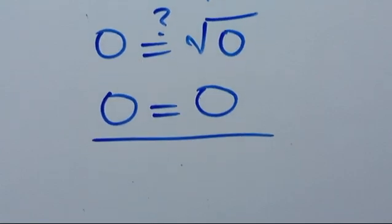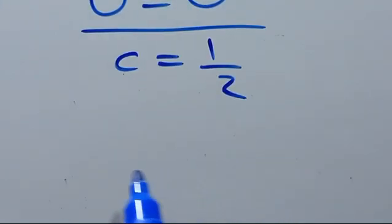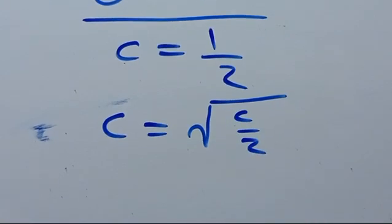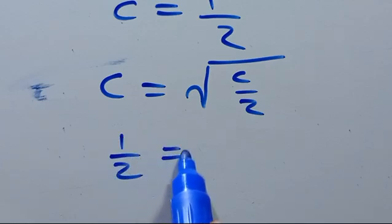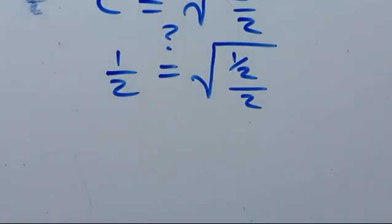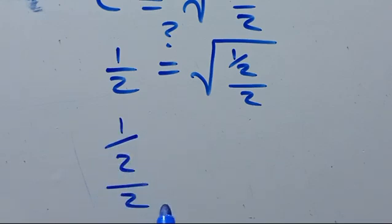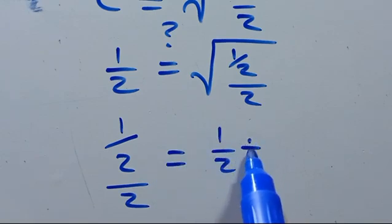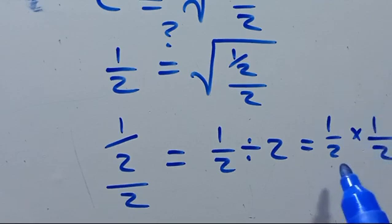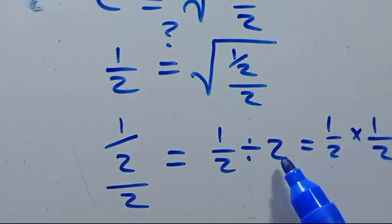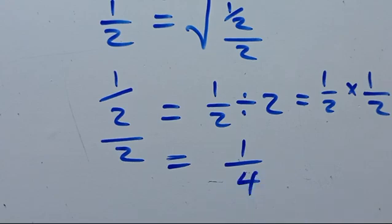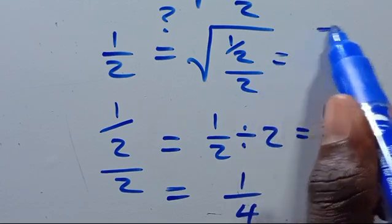Now let us verify when C equals 1 over 2. We substitute into C equals the square root of C over 2, giving 1 over 2 equals the square root of (1 over 2) divided by 2. Recalling that 1/2 divided by 2 equals 1/2 times 1/2 (changing division to multiplication by the reciprocal), this gives 1 over 4. So we need to check 1 over 2 equals the square root of 1 over 4.